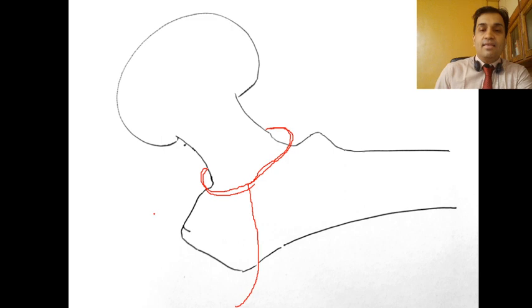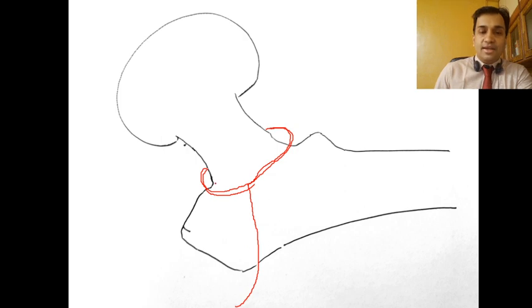Out of this ring, the medial circumflex femoral artery gives 75% of the blood supply and the lateral circumflex femoral artery gives about 25%.